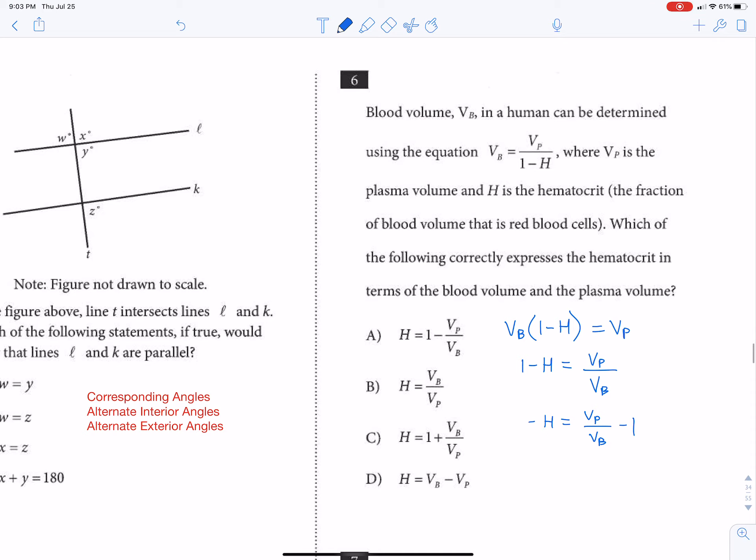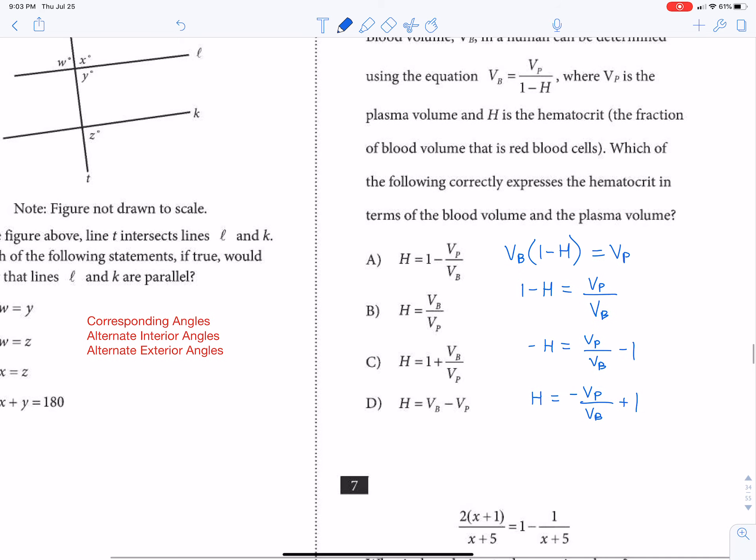So I'm going to have to divide both sides by that, and that's going to flip the sign. So it's going to be h equals negative vp over vb plus one. And of course that's not an answer, but we can flip that around and write it as one minus vp over vb. And in that case, that's definitely answer choice A.